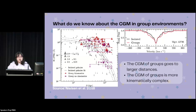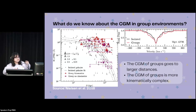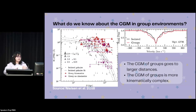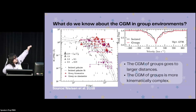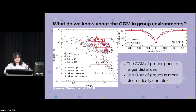A trend that we see usually in studies of the circumgalactic medium in group environments is the one shown here. In this plot on the left, we can see equivalent width versus impact parameter — that means distance from the center of a galaxy — and the absorption. The gray dots show isolated galaxies, while the purple and red triangles show group galaxies. We can see that the gray dots decrease the farther away you move from the galaxy, while the triangles don't really decrease — they remain constant. The conclusion is that the circumgalactic medium of group galaxies extends to larger distances.